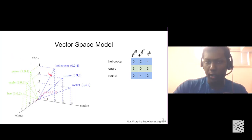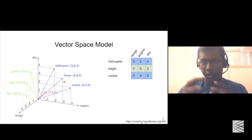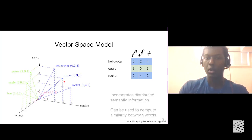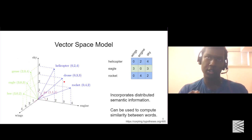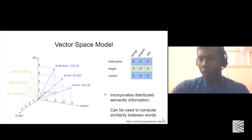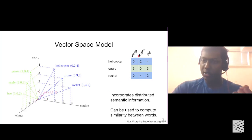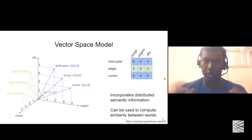Similarly, we can find that helicopter is similar to drone because they lie in somewhat similar vicinity in the n-dimensional space — we can calculate if words are closer to each other than any other pair. It also incorporates distributed semantic information, where each dimension can be thought of as some characteristic for a specific word, like wings, engine, or sky. This is an important idea because it helps us compute the similarity between words.